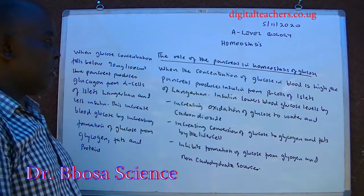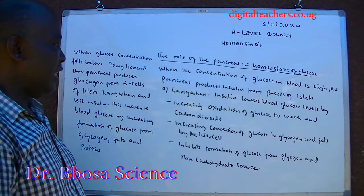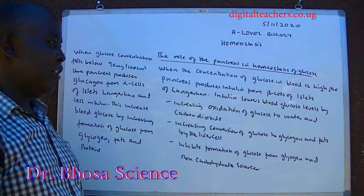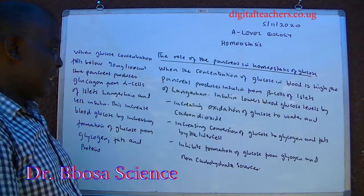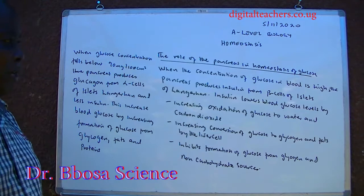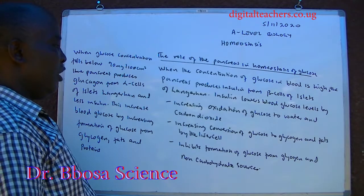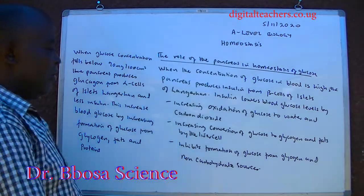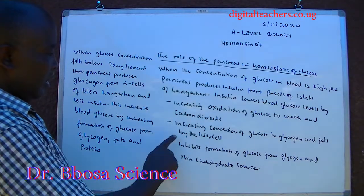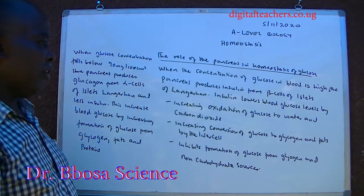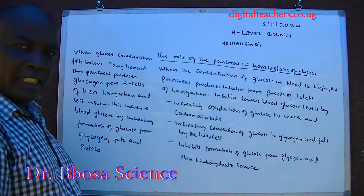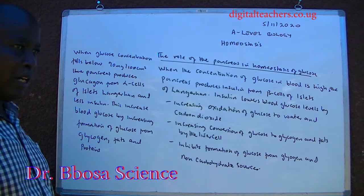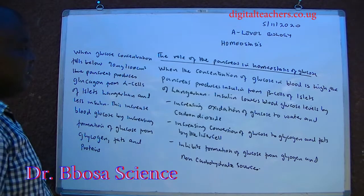The role of the pancreas in the homeostasis of glucose. When the concentration of glucose in the blood is high, the pancreas produces insulin from beta cells of the islets of Langerhans. Insulin lowers blood glucose levels by increasing oxidation of glucose to water and carbon dioxide, increasing conversion of glucose to glycogen and fats by liver cells, and inhibiting formation of glucose from glycogen and non-carbohydrate sources.